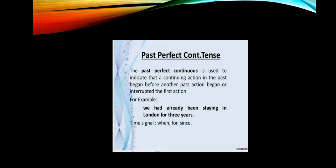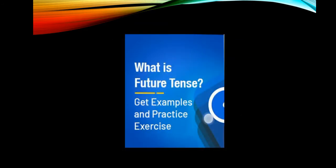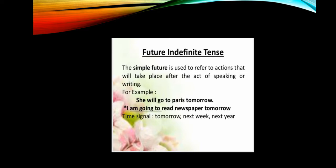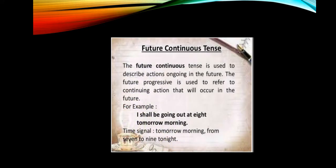Simple future tense is used to denote future actions. It refers to actions that will take place after the act of speaking or writing — for example, 'She will go to Paris tomorrow.' For near future actions, present continuous can be used, such as 'I am going to read the newspaper tomorrow.'